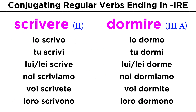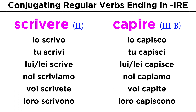As you'll notice, pattern A is not much different from how we would conjugate a verb in the second conjugation, with the only difference being that the second person plural ends in –ite, rather than –ete. But pattern B shows something a bit unprecedented. A group of letters, ISC, is placed between the base of the verb and the ending in all forms except first and second person plural. This is normal, and it does not make capire an irregular verb.